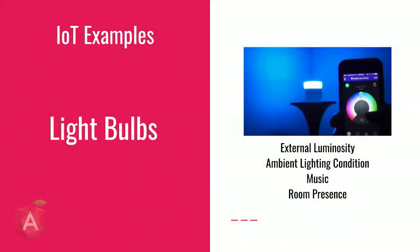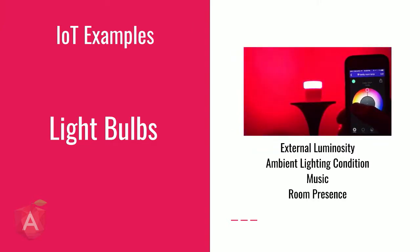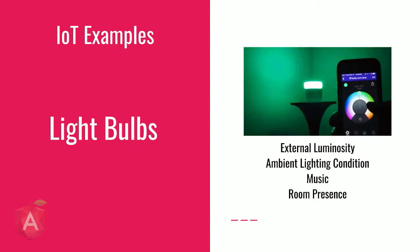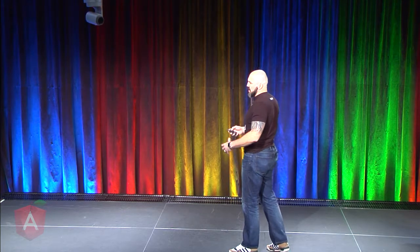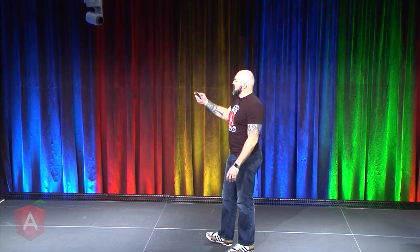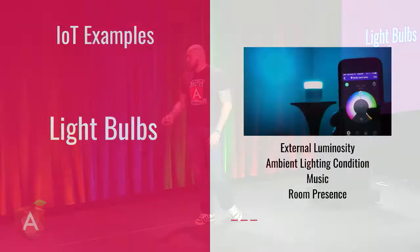There are a few examples out there. Who here plays with some smart light bulbs, things that change colors at home? That's one of the applications of Internet of Things. You see somebody using an application to change the color of the light bulb to set up the mood depending on what's going on. They can react to the external luminosity and ambient lighting conditions to make people less tired. And nowadays, they can actually listen to music and set up a disco in your living room, which is pretty cool.